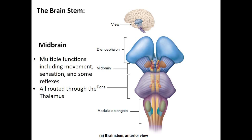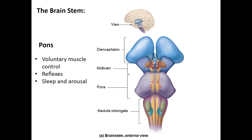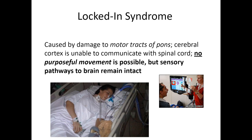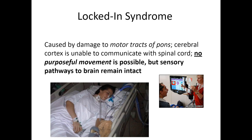The brain stem includes three regions. The midbrain is associated with movement, sensation, and some reflexes. The pons handles more voluntary muscle control, additional reflexes, and the ability to sleep and wake — damage here can cause locked-in syndrome, where the individual is fully aware and cognitively intact but cannot move. The medulla oblongata regulates the cardiovascular and respiratory systems, perceives touch, pressure, temperature, taste, and pain, and controls chewing, swallowing, and involuntary responses like vomiting, coughing, and sneezing.